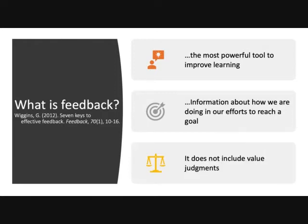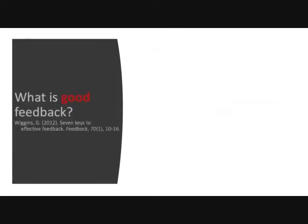You can't improve unless you know how close you are to getting to your goal. And most importantly, feedback does not include value judgments — this is where the clash between grades, evaluation, and feedback comes in. So what qualities does good feedback have? Grant Wiggins says these are the seven keys. The first one is that it is goal-referenced. When we're talking about writing and speaking, the goal is to communicate clearly, to communicate your message — so how well are the students communicating their message? That's the goal.